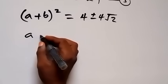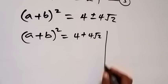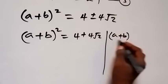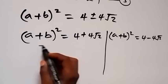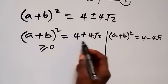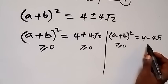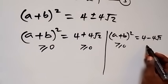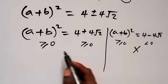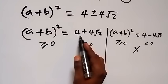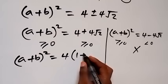We have two possible cases: case 1 is (a + b)² equals 4 plus 4√2, and case 2 is (a + b)² equals 4 minus 4√2. Since (a + b)² must be greater than or equal to zero, and 4 minus 4√2 is less than zero, case 2 has no real solution. So we proceed with case 1. Factoring out 4 gives (a + b)² equals 4 times (1 plus √2).